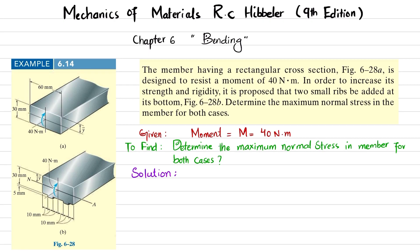Let's start with the solution. For case A, that is without ribs, we know that maximum normal stress is equal to moment multiplied by C — where C is the maximum distance from the neutral axis — divided by I. So we will find the moment of inertia I.